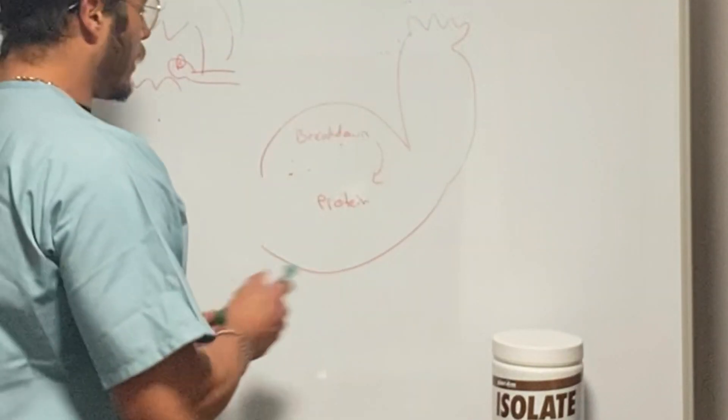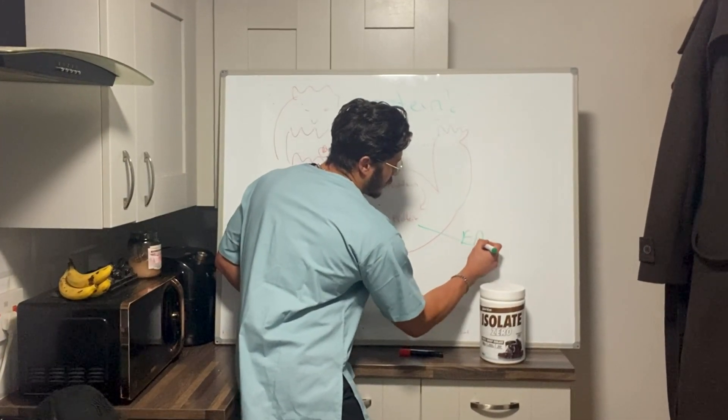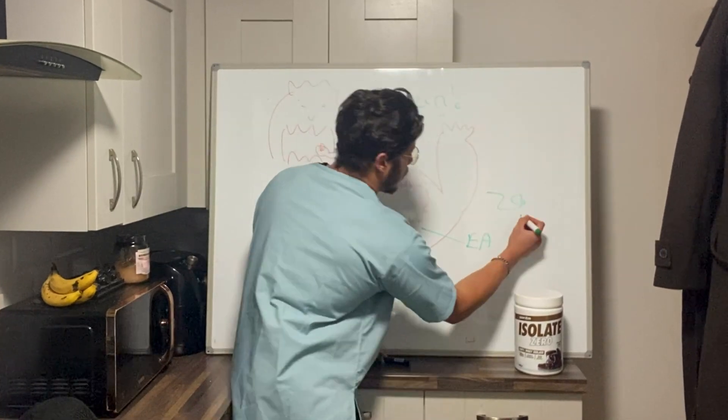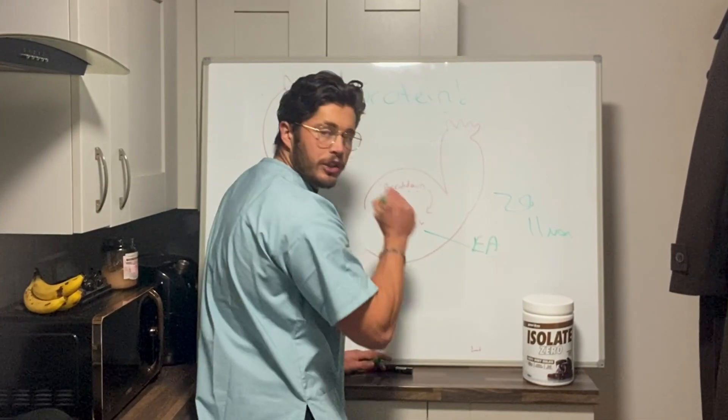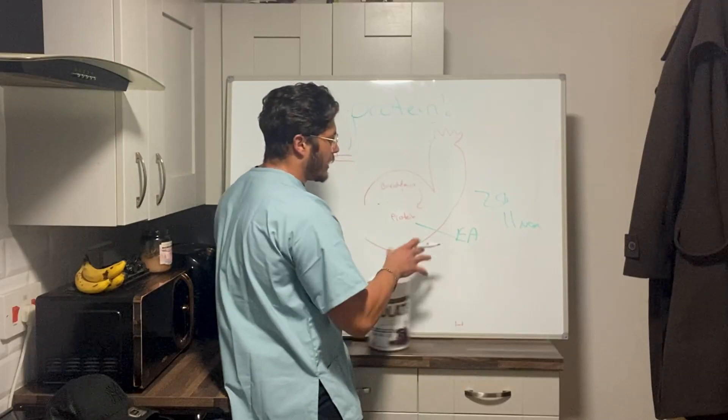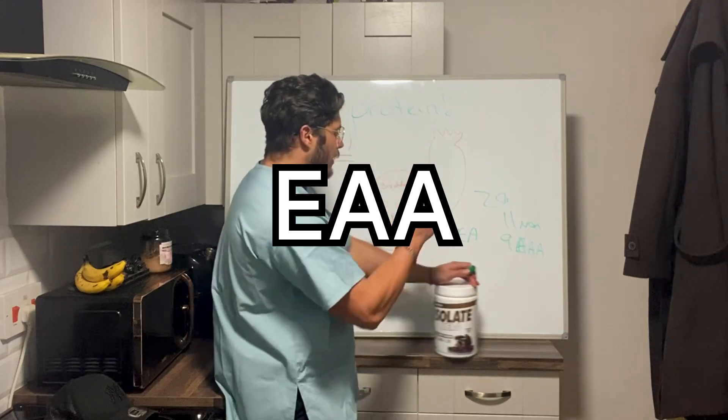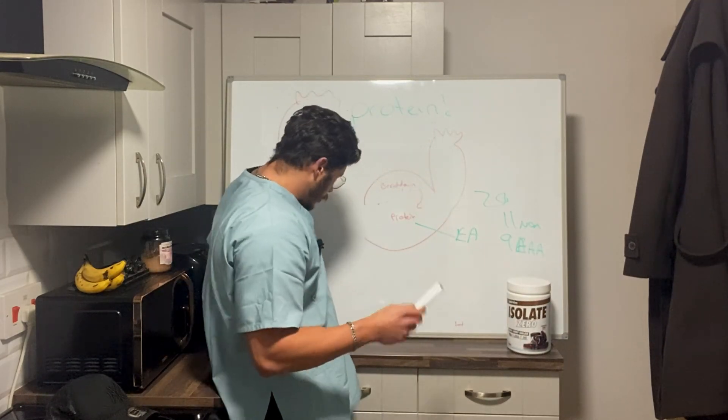It takes the protein, breaks it down into amino acids—20 amino acids, and 11 are non-essential which your body can already produce whilst it's breaking down this protein. That leaves nine essential amino acids which it cannot get from itself.